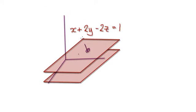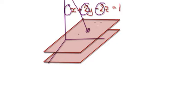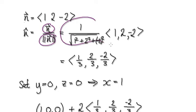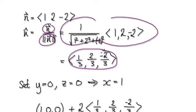First things first, we've got to extract the normal vector and then divide it by its magnitude. So the normal vector would be (1, 2, −2). We divide it by its magnitude, and that gives us our unit normal vector.